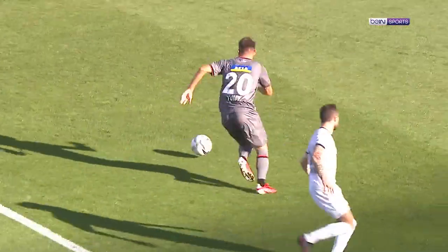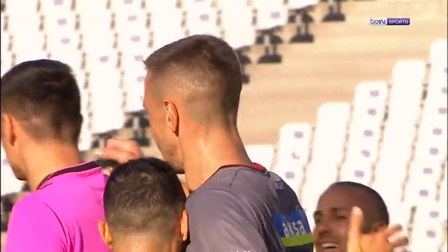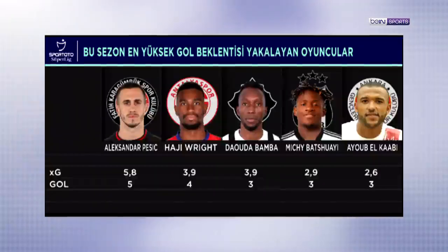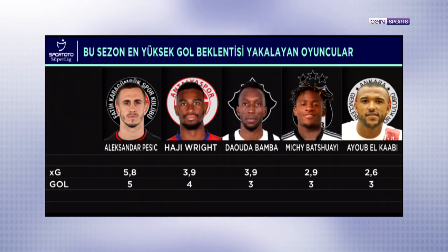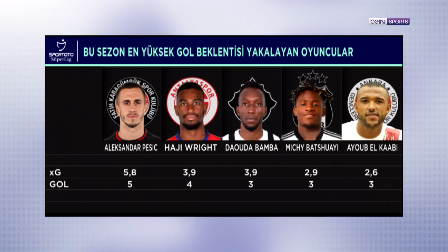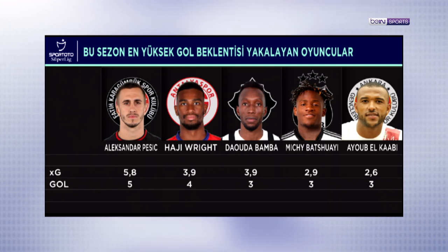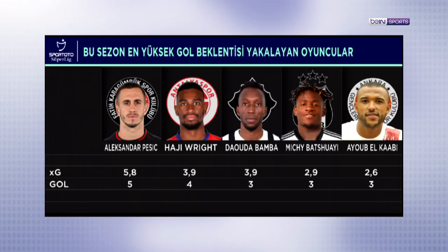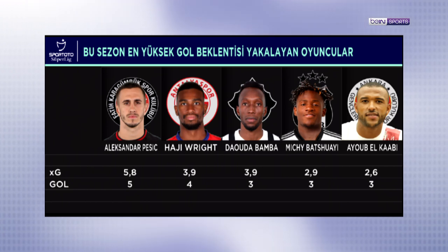Gol beklentisi, oynadıkça ve şut çektikçe yükselen bir şey. O nedenle maç haftası oynanırken hazırladığımız bu bölümdeki liste çok çabuk bir şekilde değişebilir. Bizim bölümü hazırladığımız sırada bireysel gol beklentisinde ilk sırada Vavacars Fatih Karagümrük'ten Aleksandar Pešić 5.78 gol beklentisiyle yer alıyor. Onu 3.94 ile Fraport TAV Antalyaspor'dan Haji Wright takip ediyor. Pešić'in 5, Wright'ın 4 golü her iki oyuncuyu da gol beklentilerine yakın yerlere koyuyor.